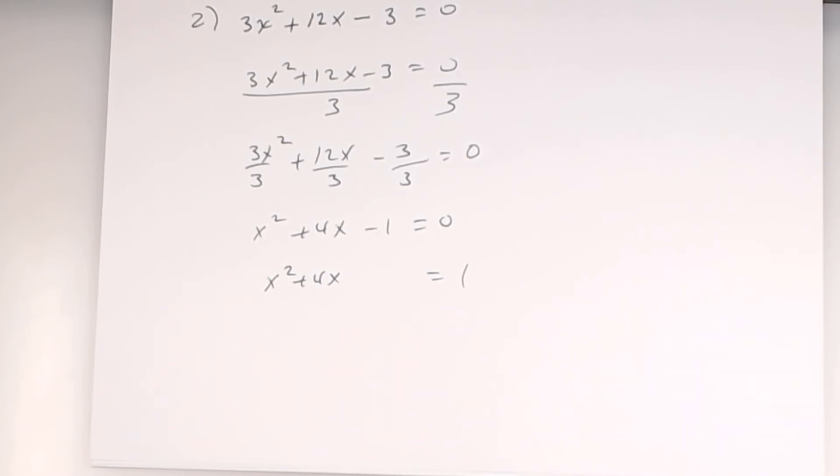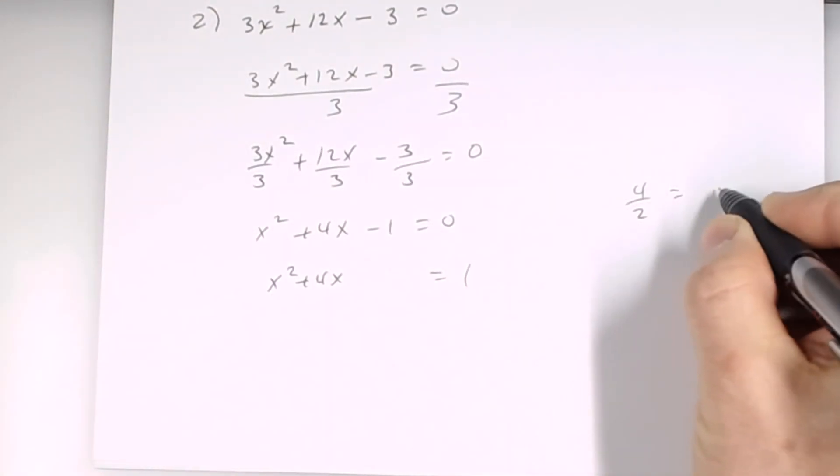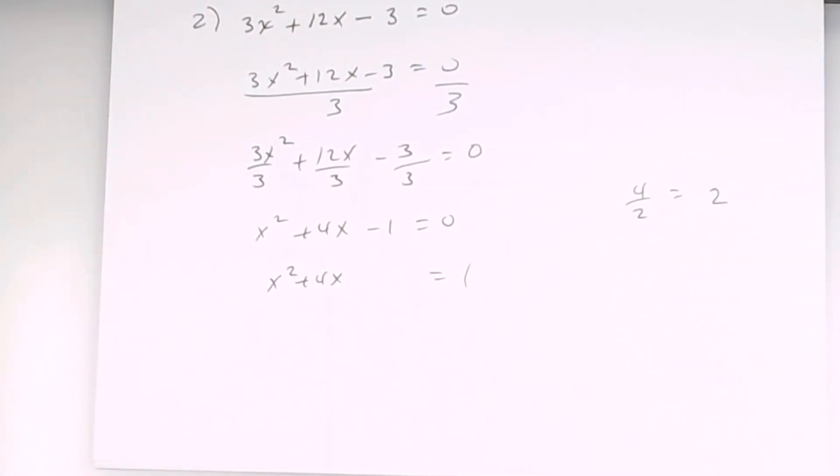Take the coefficient of x, which is? 4. Coefficient of x is 4. I've got to do what to that? Divide by 2. What do we have to divide by 2? 2. All right.